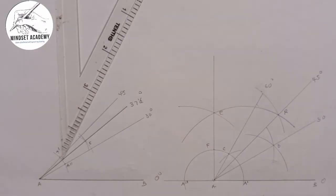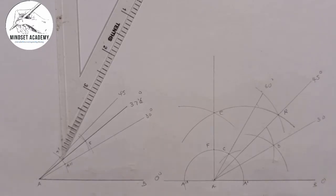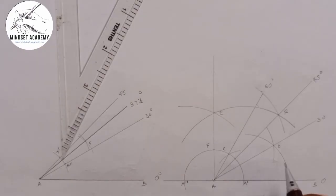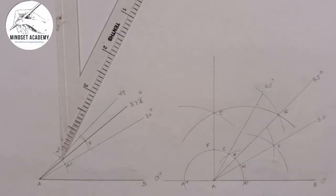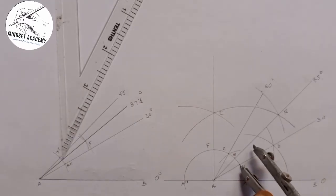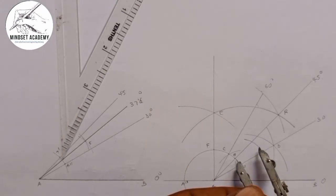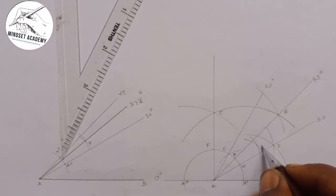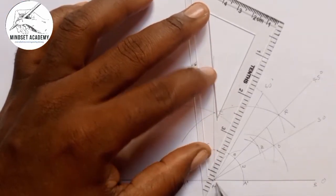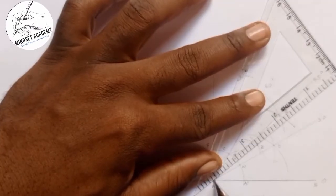Now, 45 minus 30 gives 15 degrees. I'll call the intersection point on the 45-degree line M and the intersection point on the 30-degree line N. If I bisect 15 degrees I get 7.5. So I place my compass at N at any given radius and strike an arc; I place it at M and strike another arc. Where they meet I call point Z. I draw a line from A through point Z — that gives me 7.5 degrees.